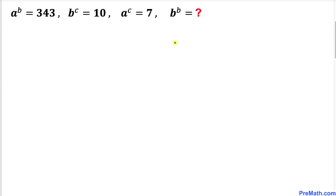In this tutorial we have got this exponential problem. Here's our problem: a power b equals 343, b power c is 10, and a power c is 7. Now we are going to find the value of b power b.